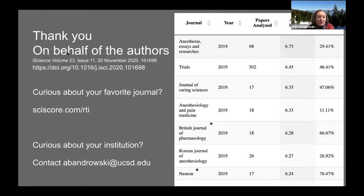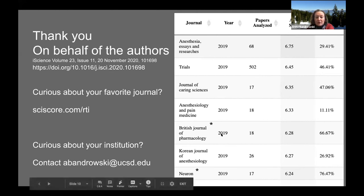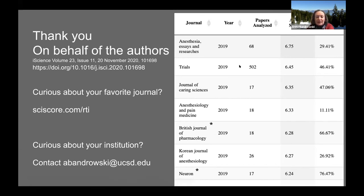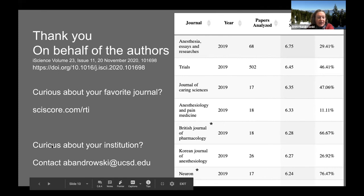Thank you very much for listening on behalf of the authors of this paper, which was just published in November. If you're curious about your favorite journal, please check out SciScore slash RTI. Two of the 2019 top journals — Neuron and British Journal of Pharmacology — are on our list of journals we've worked very closely with. If you're curious about any of this, please contact me.